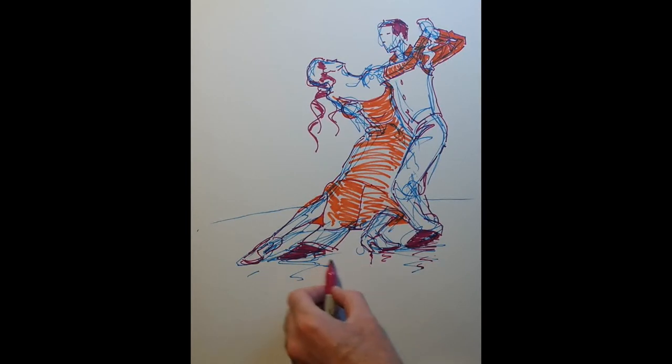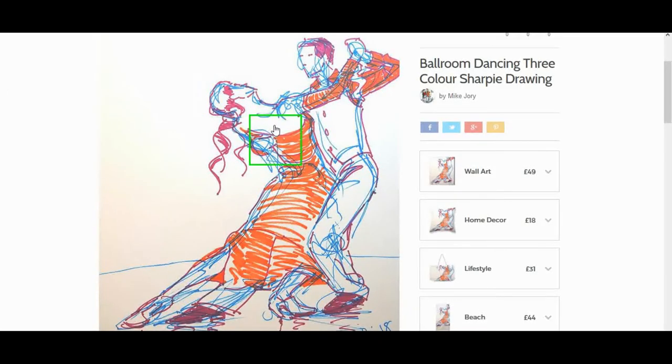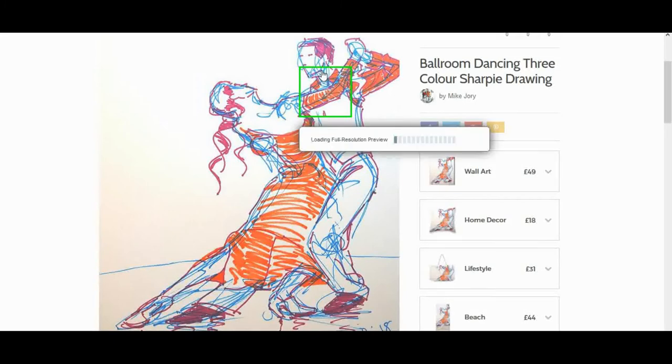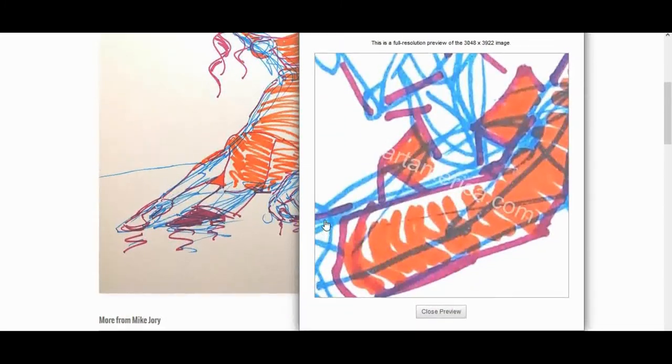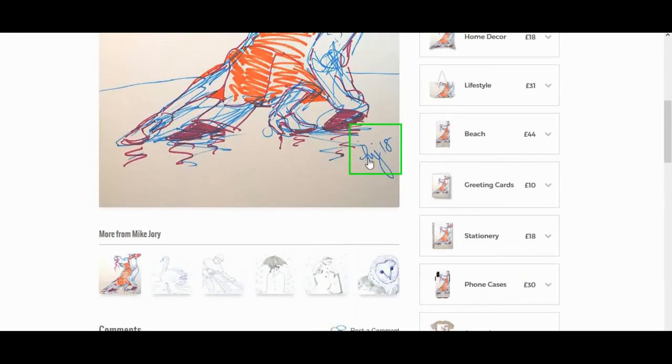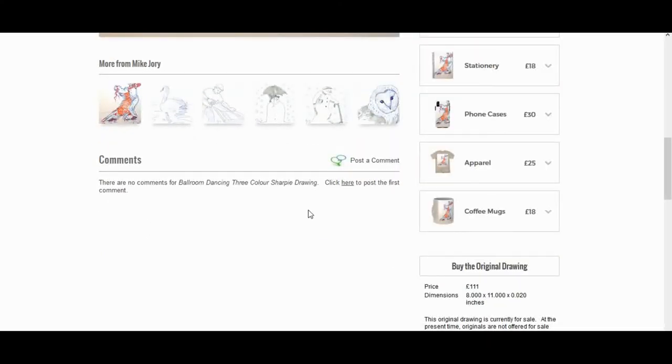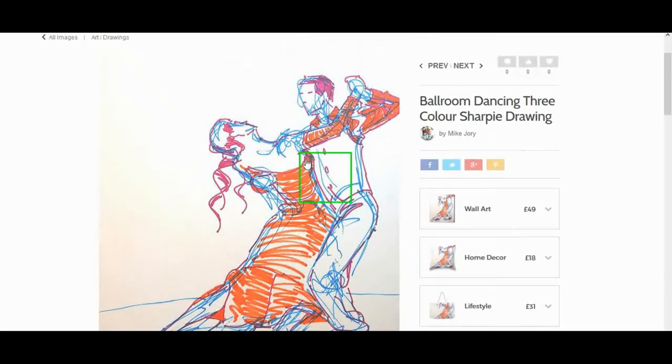So that's pretty much it for this drawing. As usual, I've put a link to the high resolution image on my website, in the description below the video. So if you want to check out the line work and the shading that I've used in more detail, you can click on that link, and then click on the image on the website, and it will give you a blow up of the high resolution photograph. And you can move around the image and look at different areas. But in the meantime, I hope you've enjoyed the video. Look forward to seeing you next Sunday, for the next episode of the Sunday Art Show. Thanks very much for watching. See you next time.